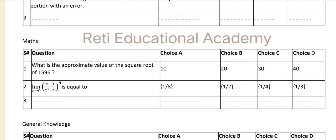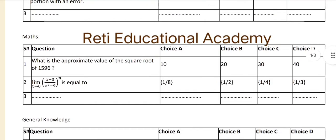Question number one: what is the approximate value of the square root of 1596? The options are A: 10, B: 20, C: 30, D: 40. The correct answer is D — 40.